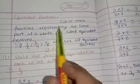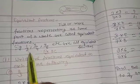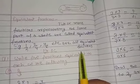Two or more fractions representing the same part of the whole are called equivalent fractions. For example, 1 upon 2, 2 upon 4, 4 upon 8 are all equivalent fractions.